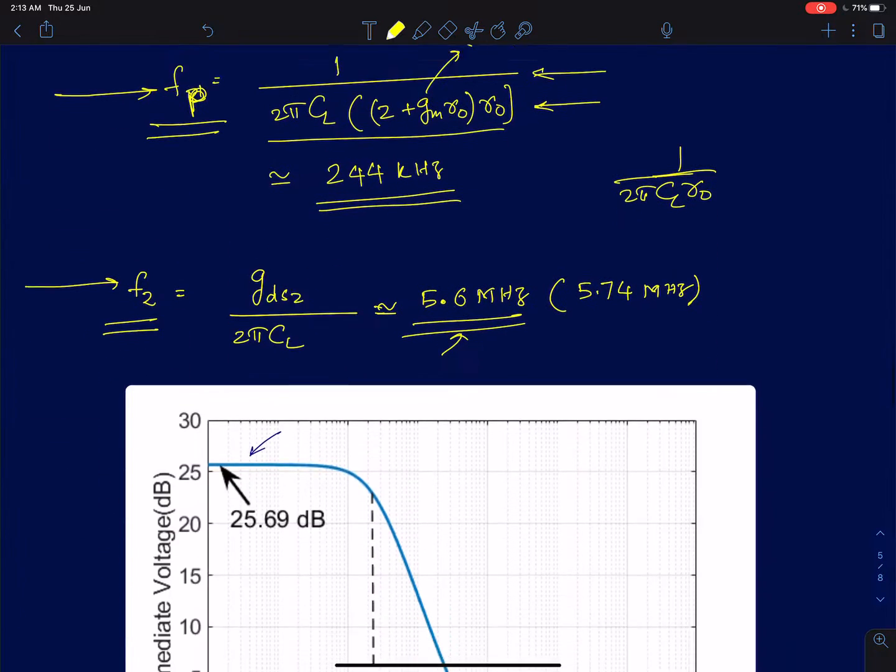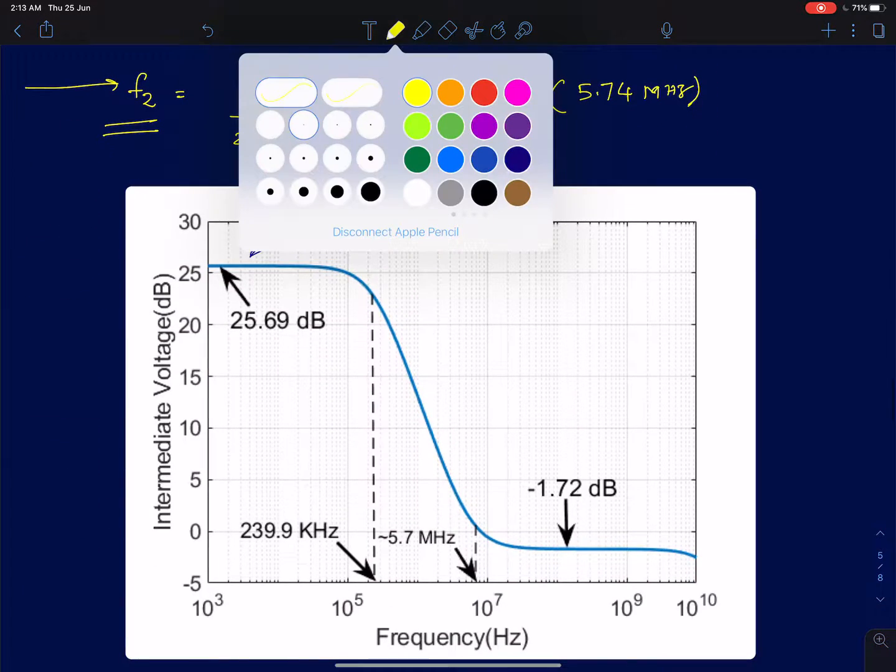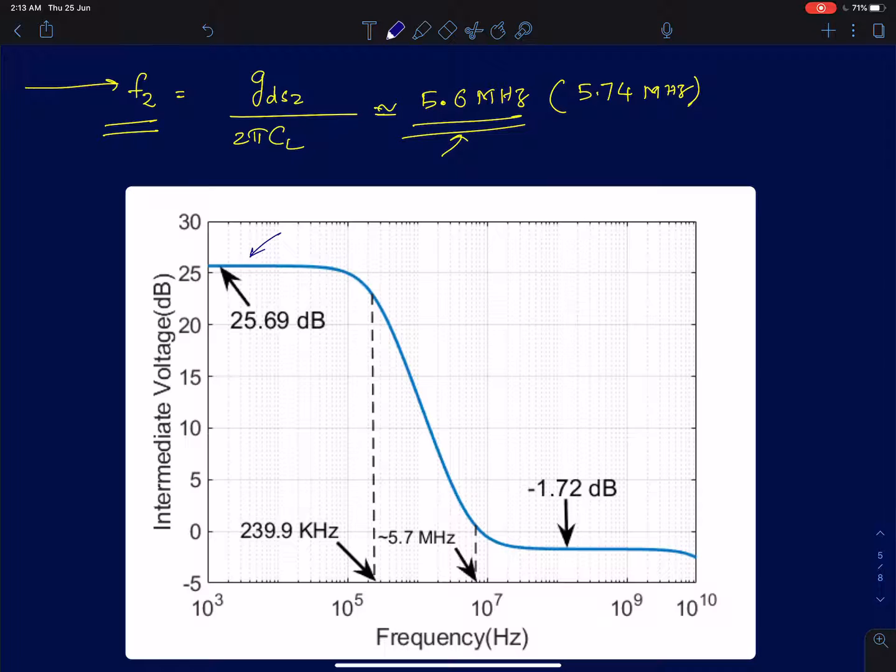What we see in the simulation result is very much as what we actually analyzed in the previous lecture. This is the stage 1 gain which is a common source stage. You can see that the DC gain is close to, the gm is 6.7 by 0.3. So it's close to 20, very close to 20. So 20 log of 20 is, the gain is reported in decibels, so it's 26 dB. So it's 25.6 or 25.7 here. It's not exactly 20. So that's why you see the difference.